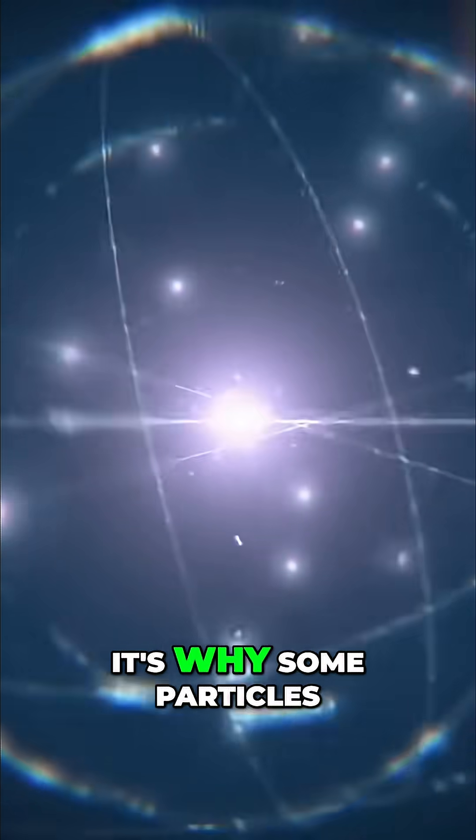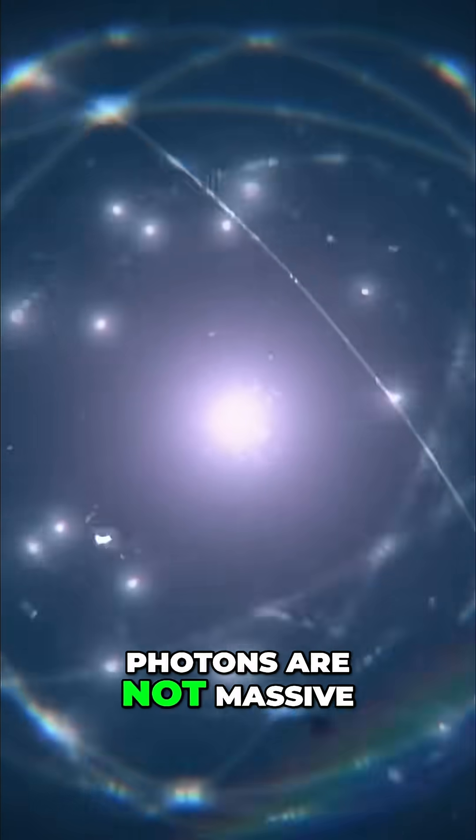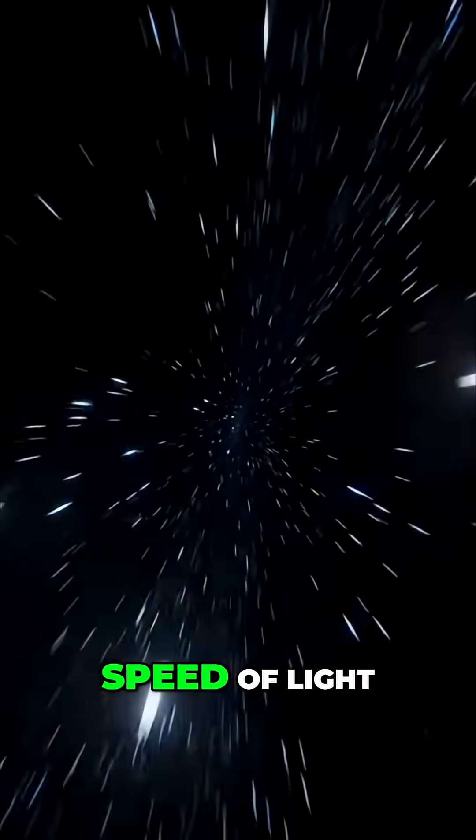It's why some particles are massive, like electrons and quarks, and some things like photons are not massive. They're massless. And they travel through the universe at the speed of light.